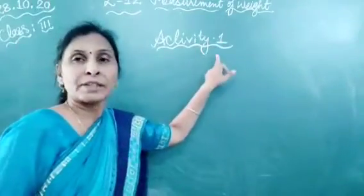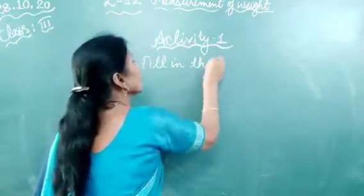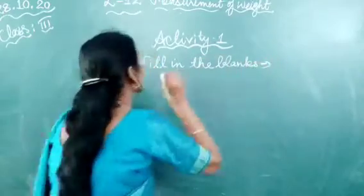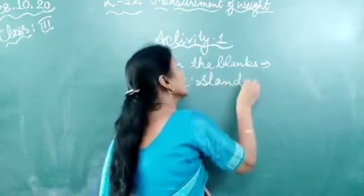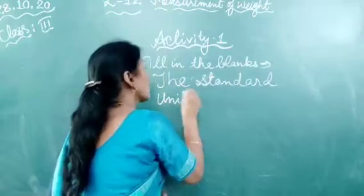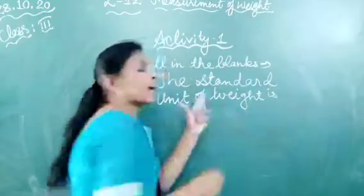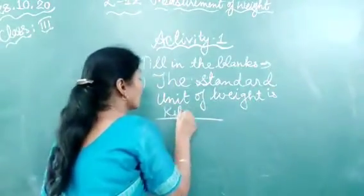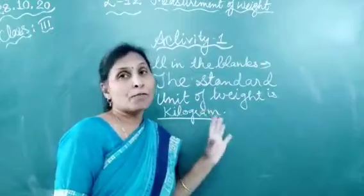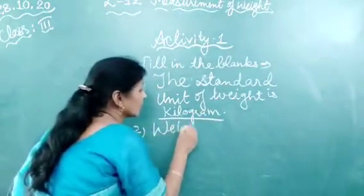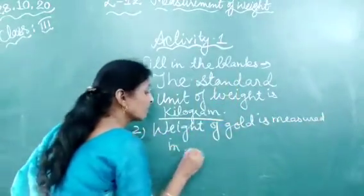Now start Activity 1: fill in the blanks. Number 1: The standard unit of weight is kilogram. Number 2: The weight of gold is measured in grams.